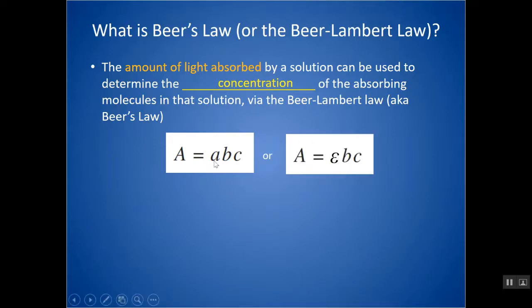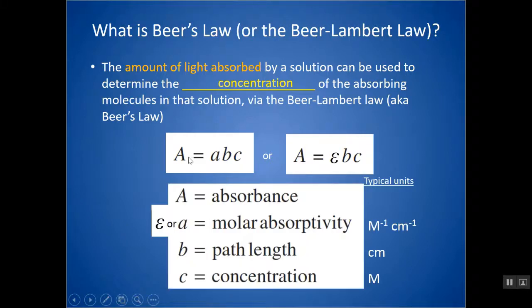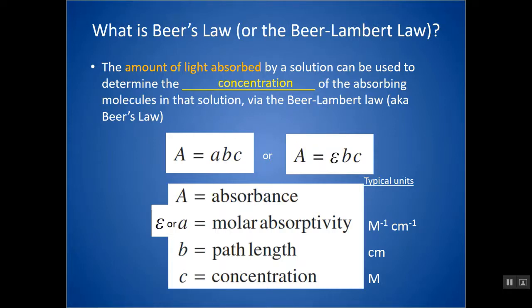You can see it in one of two different ways. This capital A is absorbance — it's something that's typically measured with a spectrophotometer. This little 'a', or epsilon, sometimes written as either, is just a constant called the molar absorptivity constant. It varies depending on what material you're using — so copper sulfate would have a different constant than nickel chloride, and so on. It depends on the substance and how well it absorbs light.